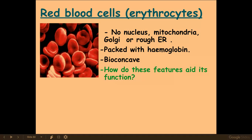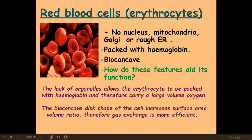Haemoglobin is a quaternary structure protein — you may need to refresh your memory of its structure. This is really good for the erythrocyte because it allows them to be packed with haemoglobin and therefore carry a large volume of oxygen. The biconcave shape also increases the surface area to volume ratio, increasing the efficiency of gas exchange.